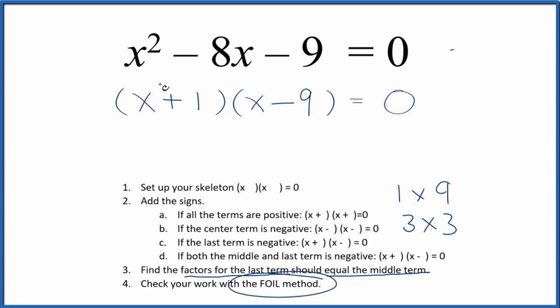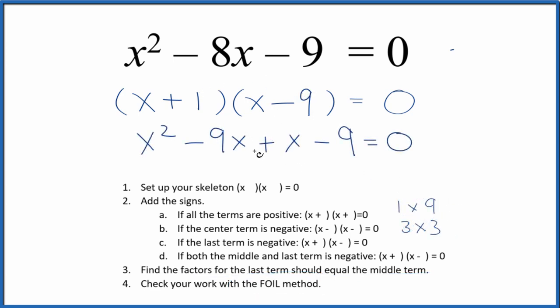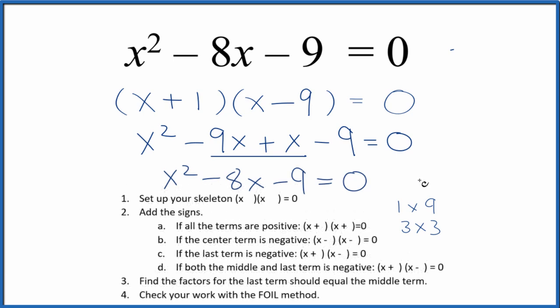We'll multiply the first, the outside, the inside, and then the last terms. And we can simplify this here, negative 9x and x, that's negative 8x. So then we get x squared minus 8x minus 9. That's what we started with. So we factored this equation correctly.